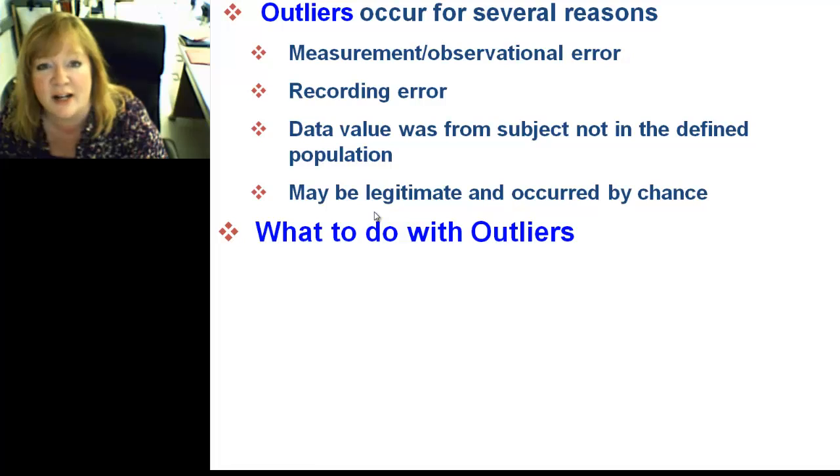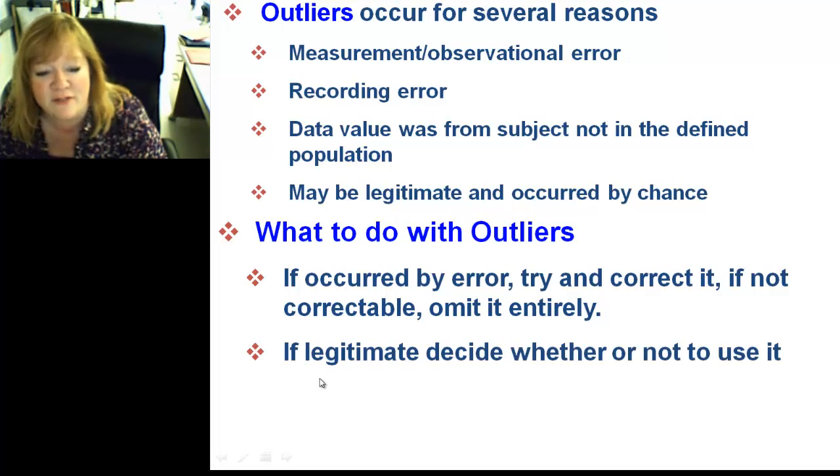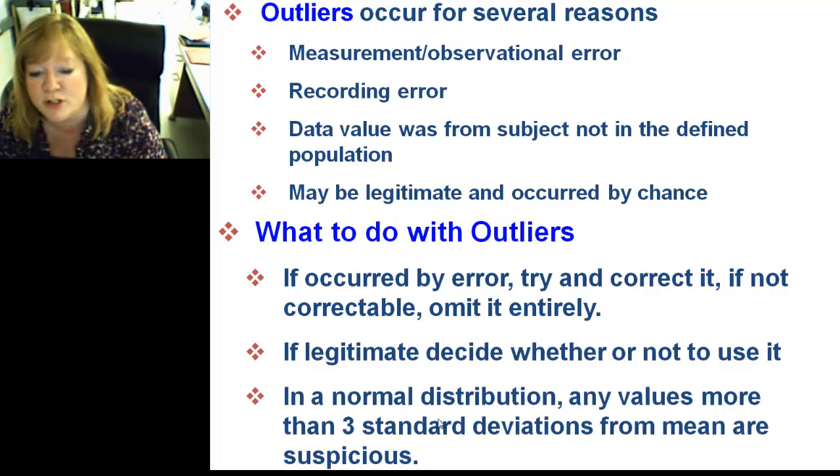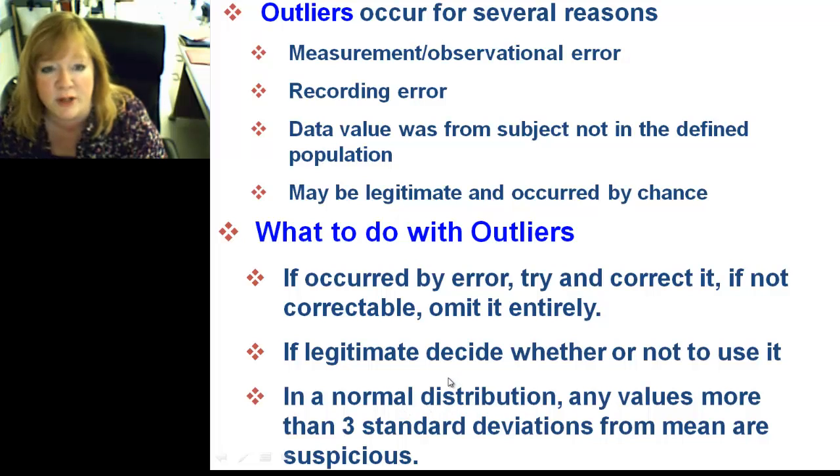What do you do with an outlier? Well, kick him to the curb. No. What to do with outliers? We're talking about outliers that are numbers way outside your data range. What do you do with them? If it occurred by an error, you try to correct the error. If not, omit it entirely. Don't even play with it. If it's legitimate, decide whether or not to use it. There's no real hard rule about this. So, you get the choice of using it. In a normal distribution, that's a bell curve, any values more than three standard deviations from the mean are suspicious. So, they are probably outliers. So, that's another reason you need the old standard deviation.